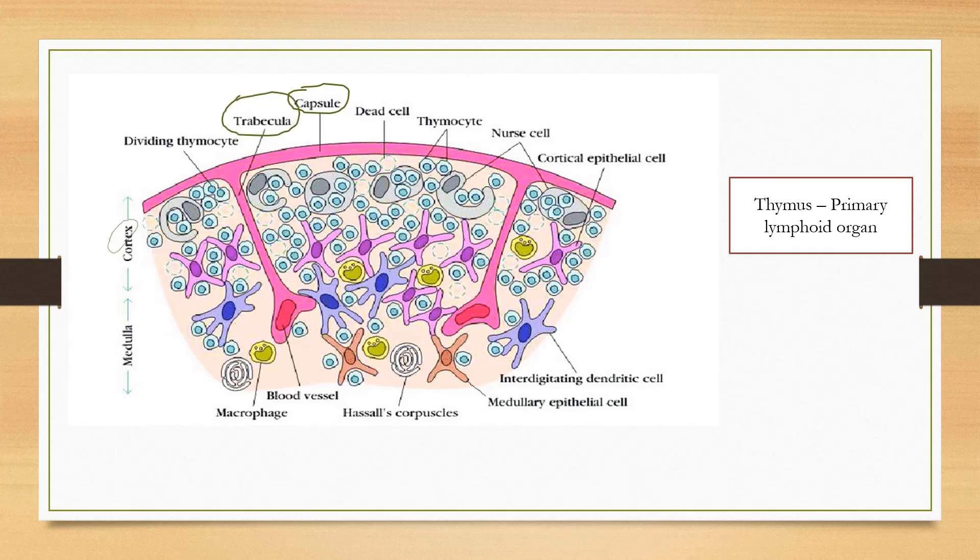The cortex, the outer region, is densely populated with immature thymocytes. And the medulla, the inner region, is sparsely populated with mature thymocytes.